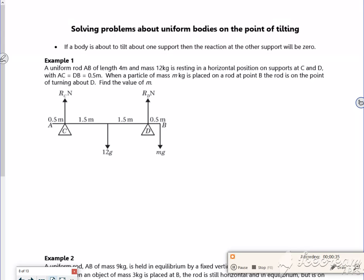If you look at this question, it says a uniform rod AB of length 4m and mass 12kg is resting in a horizontal position on supports at C and D, where they're both half a meter in.